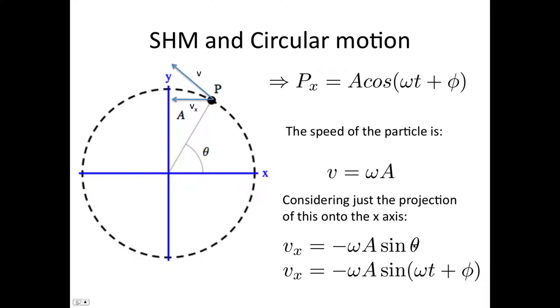And so remember, theta is just omega t plus phi. So the speed, the x component of the speed, is minus omega A sine omega t plus phi, which was the same as what we had for simple harmonic motion, showing that the projection of this motion onto the x axis is simple harmonic, at least for the velocity.